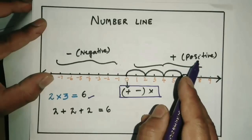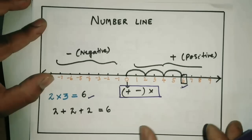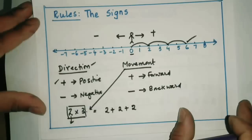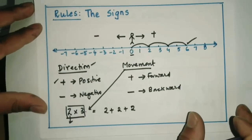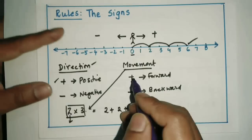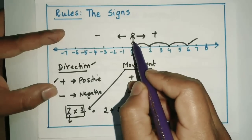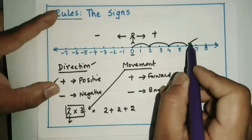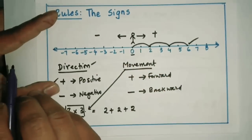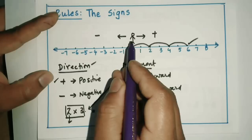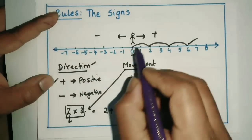Remember, 0 is neither positive nor negative — it is neutral. To understand why two negatives give a positive answer, we will formulate certain sign rules. Imagine you are standing at 0. All the numbers towards your right are positive and all the numbers towards your left are negative — so this talks about direction.